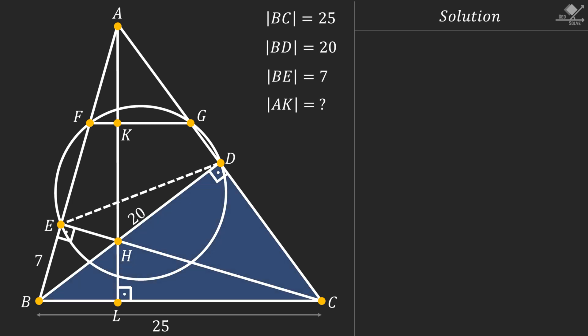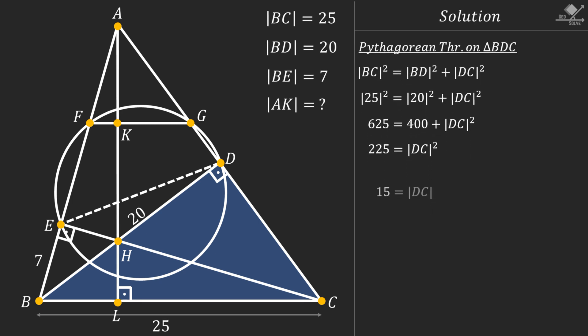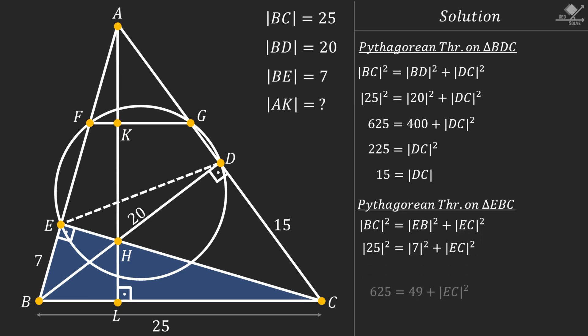Start by focusing on this blue right angle triangle. We can apply Pythagorean theorem on this triangle to find the length of line segment EC as 15 units. Now focus on this right angle triangle EBC. Applying Pythagorean theorem on this triangle, line segment EL can be calculated as 24 units.